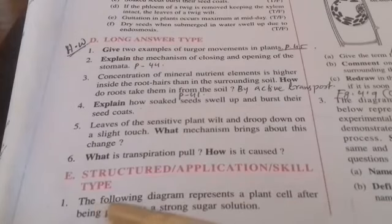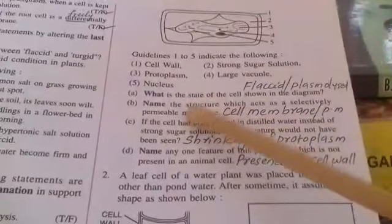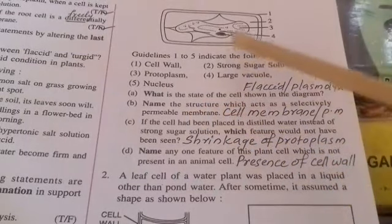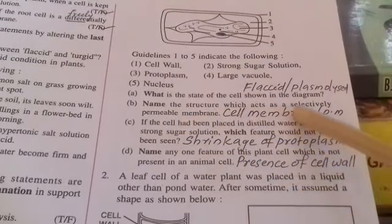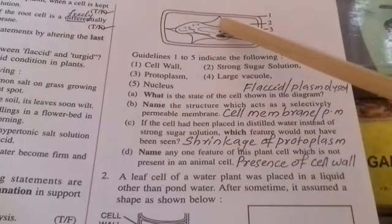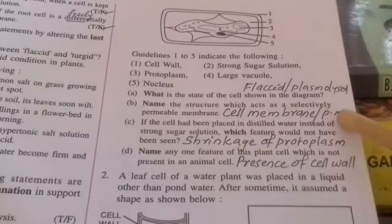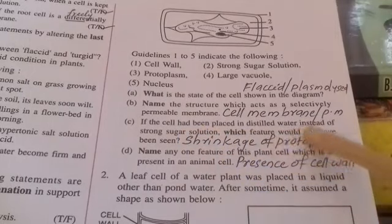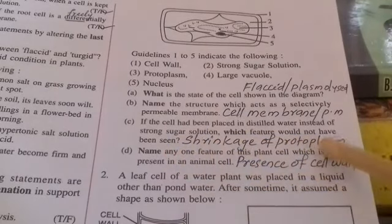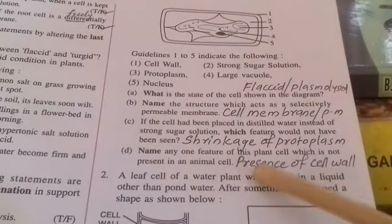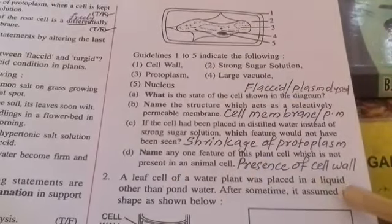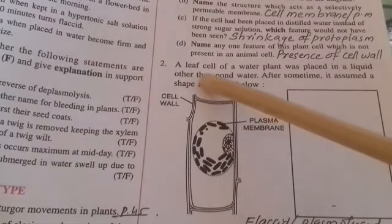Now structured application-type questions based on diagrams. First diagram question: What is the state of the cell shown? — flaccid or plasmolyzed. What acts as a selectively permeable membrane? — the cell membrane, also known as the plasma membrane. If the cell had been placed in distilled water instead of strong sugar solution, shrinkage of protoplasm would not have been seen. A feature of a plant cell not present in an animal cell — the cell wall.